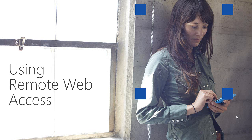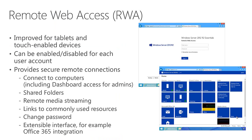The next thing I wanted to talk about is the remote access options, starting with the remote web access portal. We've had remote web access for quite some time in Essentials and in SBS before that — back in the day it was called Remote Web Workplace. The features and functionality are very much the same as they ever were, but we continue to improve the interface and how it works, especially with touch-enabled devices. In this version we've tried to align the experience to that of SkyDrive, so it's seamless for end users no matter what application they're using to access their files.